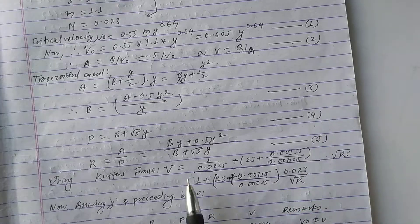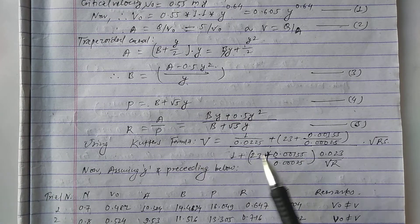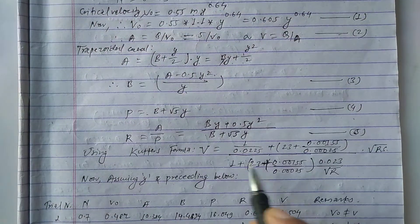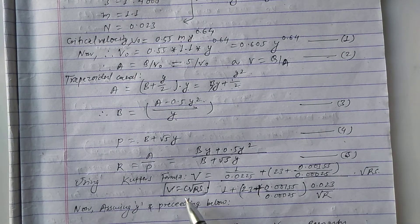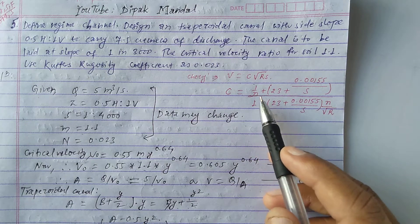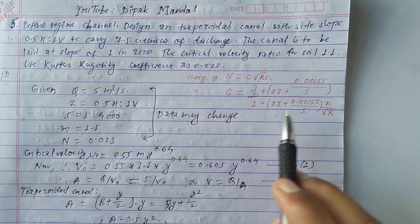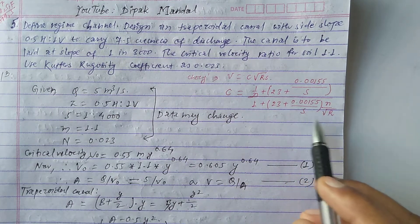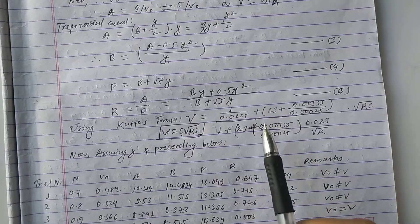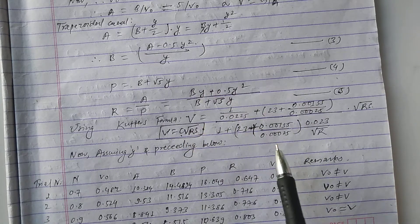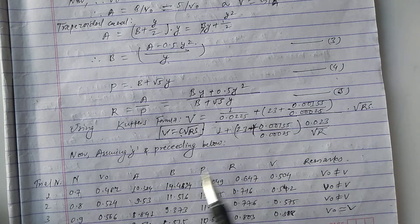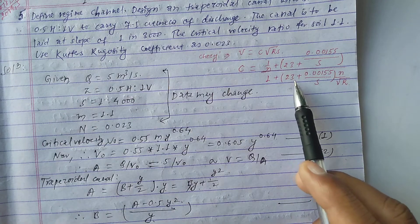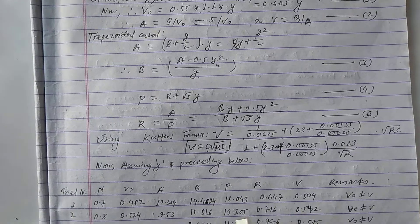We now apply Kutter's formula to find the actual velocity: V = C√(RS), where C is Kutter's coefficient given by C = (1/n + 23 + 0.00155/S) / (1 + (23 + 0.00155/S) × n/√R). With this formula and the five equations established, we can compute the actual velocity for any assumed depth y.